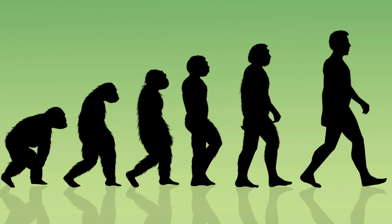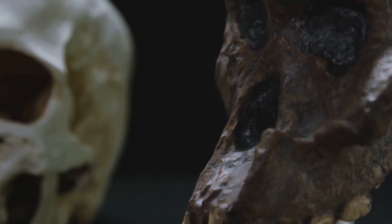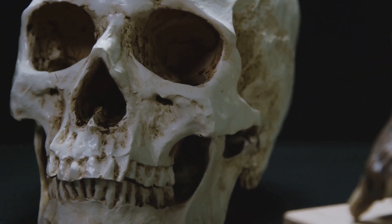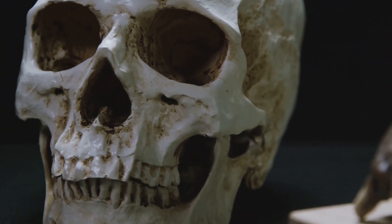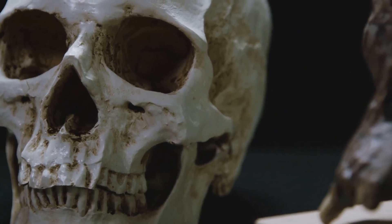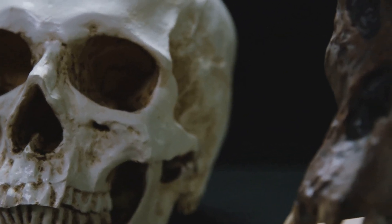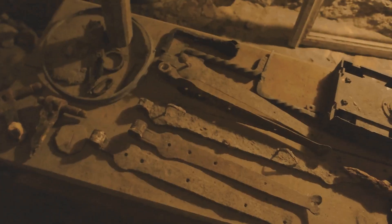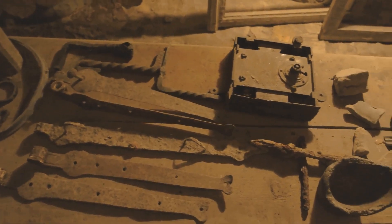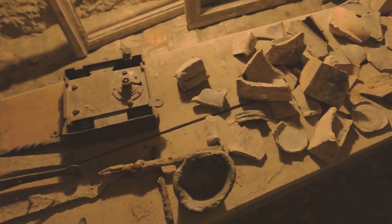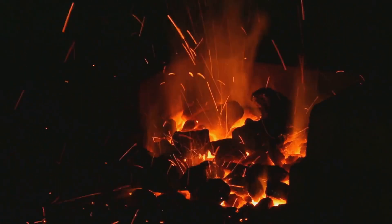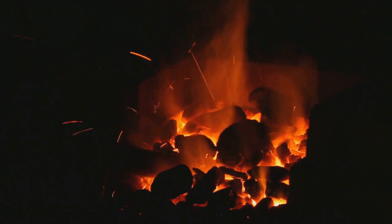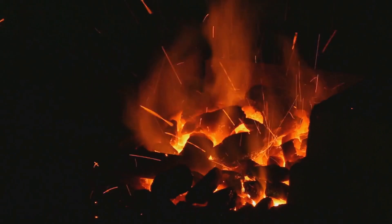Life on Earth took many forms and followed many paths but one path led to a creature unlike any other, the human being. Humans, or Homo sapiens, are a young species, having only been around for the last two hundred thousand years or so. But in that relatively short span of time we've made an immense impact on our planet and on life itself. Our evolution has been marked by significant milestones. The development of language for instance allowed for the complex exchange of ideas and the accumulation of knowledge. The invention of tools extended our physical capabilities, while the discovery of fire provided warmth, protection, and a new way to prepare food.